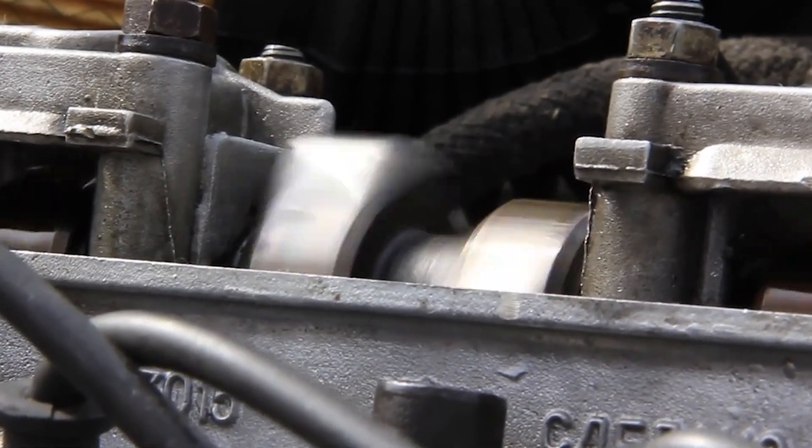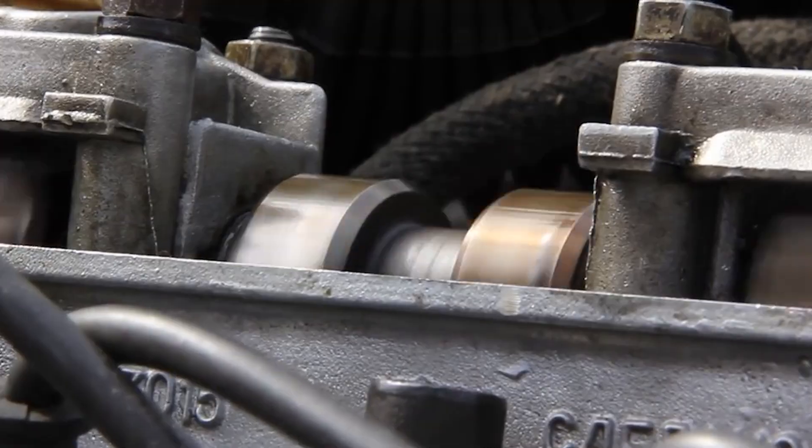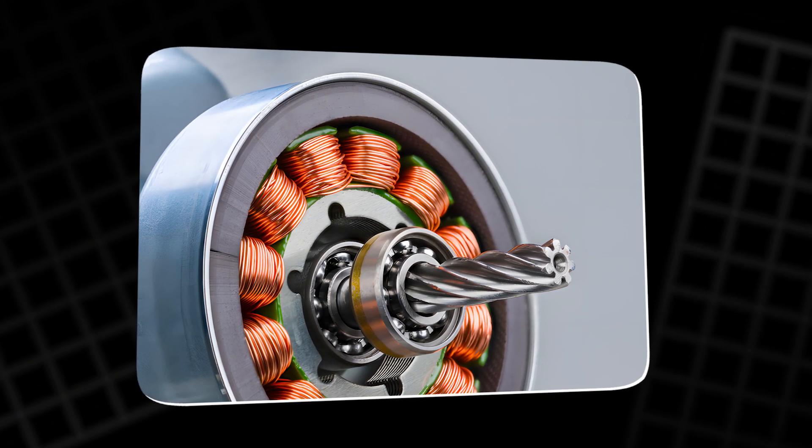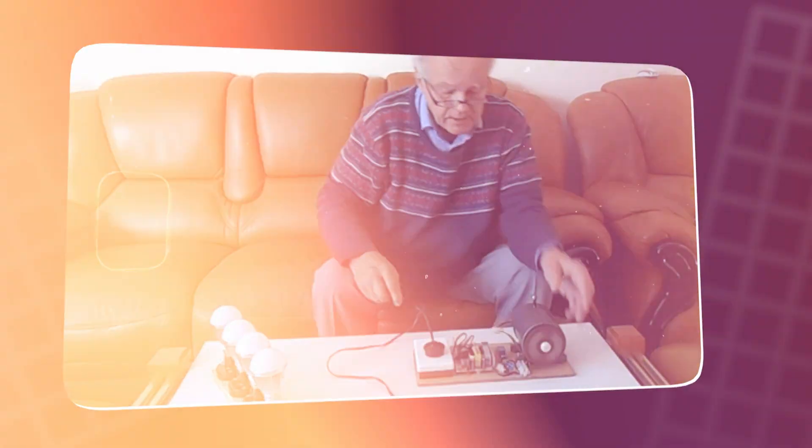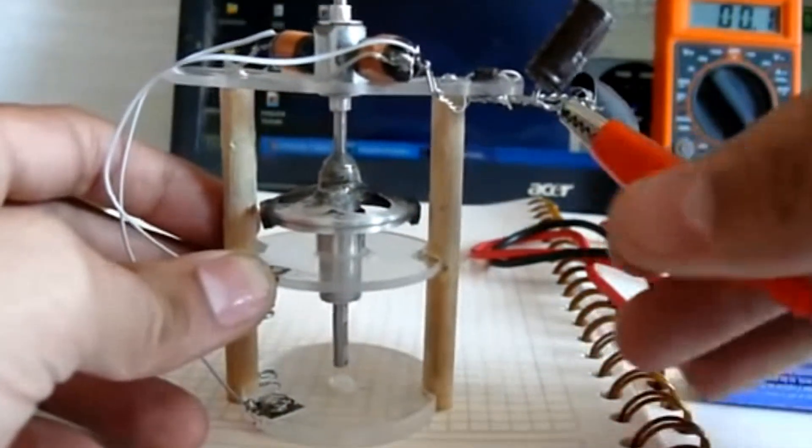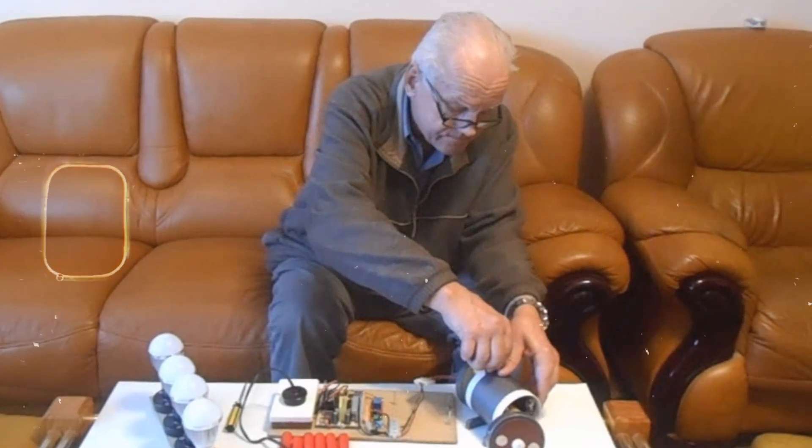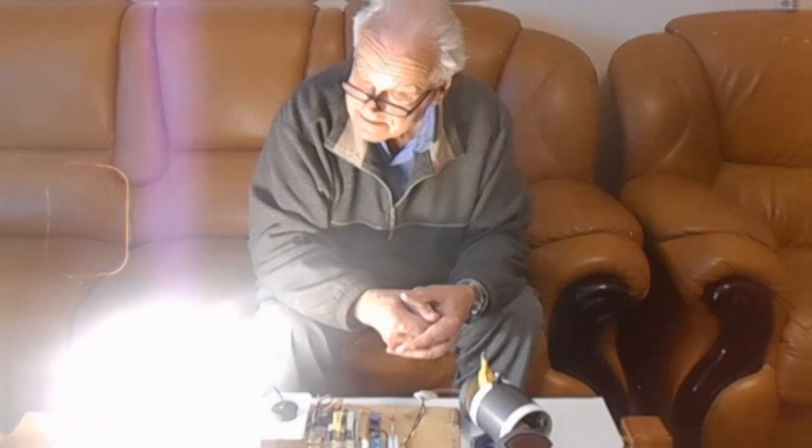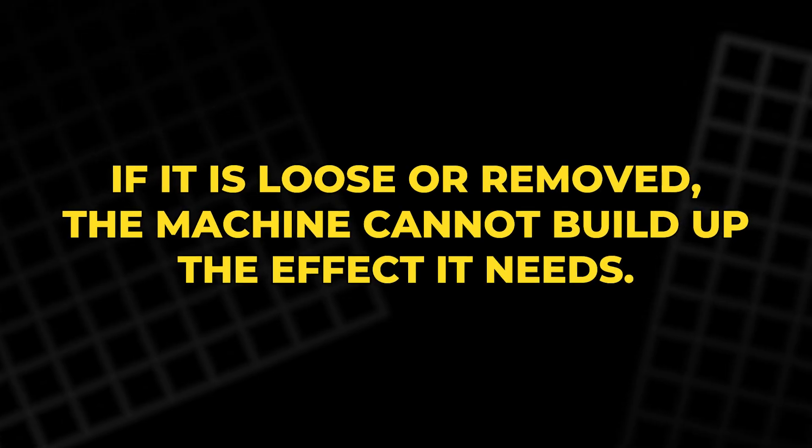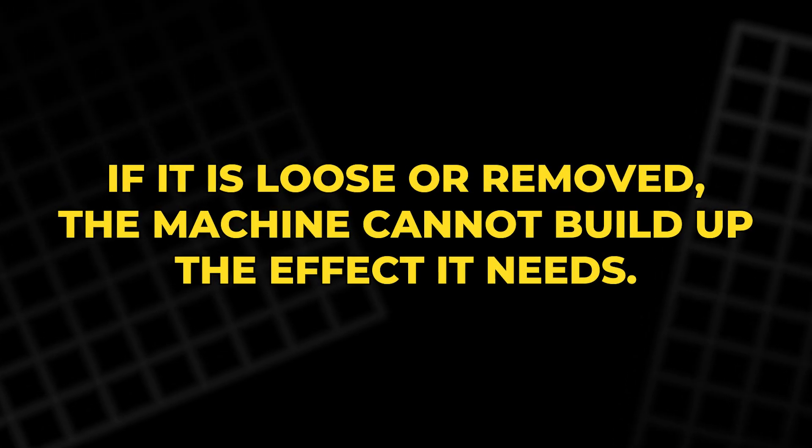The main unit of the system is the generator housing itself. At the front of this housing sits a special rotor, carefully balanced so it can spin at high speed with minimal friction. At the back is the energy receiver, a solid piece of dense tungsten alloy that acts as the antenna for the spacetime disturbance. For the device to operate, this receiver must be screwed firmly down into the body of the generator until it makes contact with the internal magnetic structure. If it is loose or removed, the machine cannot build up the effect it needs.